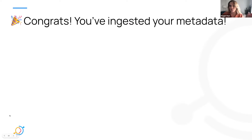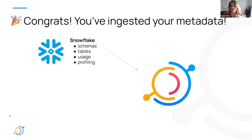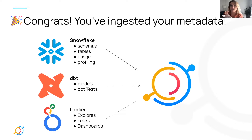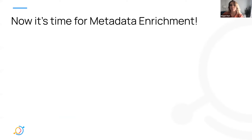Let's set the scene. You and your team have successfully ingested metadata into Data Hub. Your stack is pretty straightforward: you have Snowflake for your warehouse, so we've ingested schemas, tables, usage, profiling — basically everything. From DBT, we've ingested our models and DBT test outcomes. From Looker, we've ingested explorers, looks, and dashboards. So we have the foundation there, and now it's time to push one step further and start to enrich your metadata.